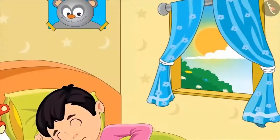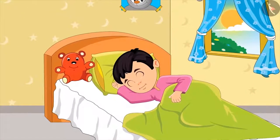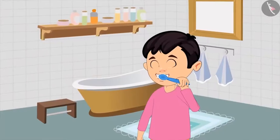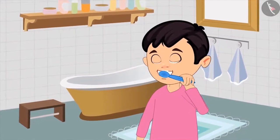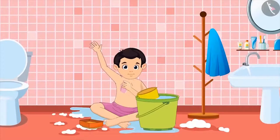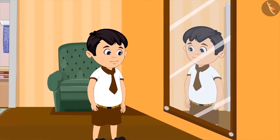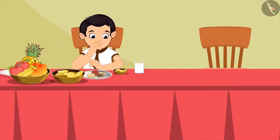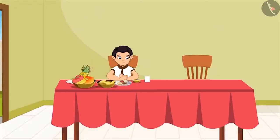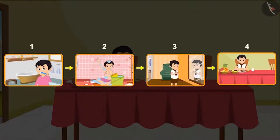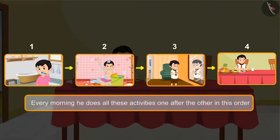It's morning time and Chotu has just woken up. He gets up and brushes his teeth first. Then he takes a bath. After taking bath, he gets ready for school. Then he eats breakfast and drinks milk. This is the order of Chotu's morning activities — every morning he does these activities one after the other in this order.